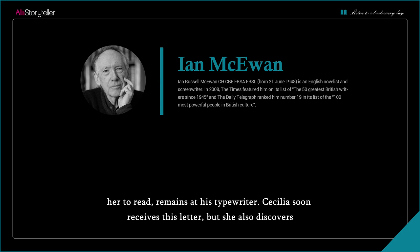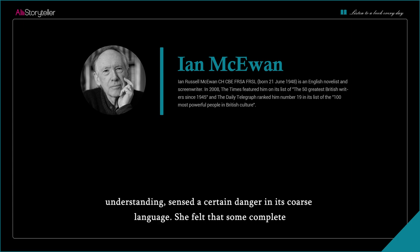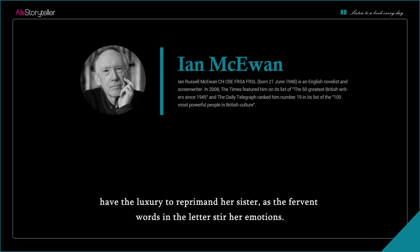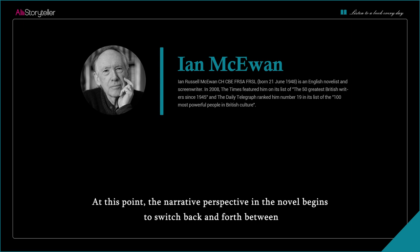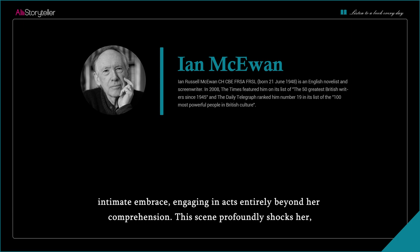Cecilia soon receives this letter, but also discovers that Bryony had secretly opened and read it. Bryony not only read it but, with her limited understanding, sensed a certain danger in its coarse language. She felt that some complete human thing — or male thing — threatened the order of her household. Nevertheless, Cecilia doesn't have the luxury to reprimand her sister, as the fervent words in the letter stir her emotions. The narrative perspective begins to switch back and forth between Cecilia and Bryony. In the estate's library, Bryony suddenly witnesses Cecilia and Robbie in an intimate embrace, engaging in acts entirely beyond her comprehension, which profoundly shocks her — she perceives it as an attack on her sister.